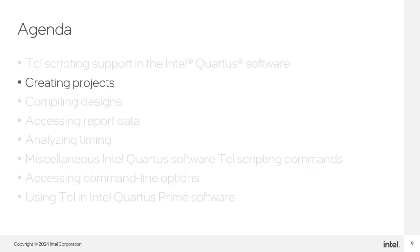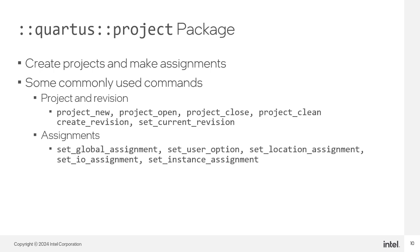Now I'll introduce the first sample application of the Intel Quartus Prime software Tickle API, which is creating projects. The Quartus project Tickle package includes commands for creating and working with projects and revisions, and for creating and working with assignments and settings. The commands listed here are a subset of commands available in the project package. There are commands for working with projects and revisions, including project_new, project_open, and project_close commands.